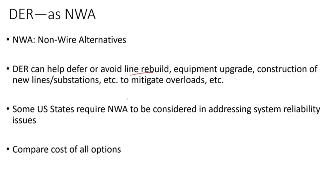Some United States states require non-wire alternatives to be considered in addressing system reliability issues — in other words, included as part of that evaluation. So to mitigate an overload, you say 'okay, I need to rebuild this line' — but what if we install solar instead? You compare costs and pick the best option that addresses reliability and is also cost-effective.